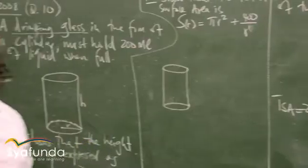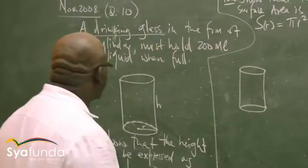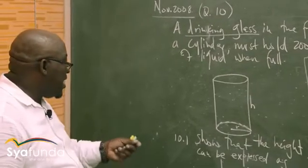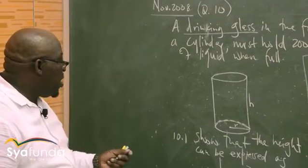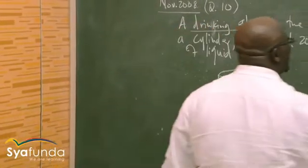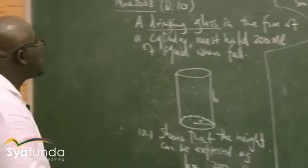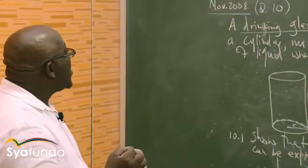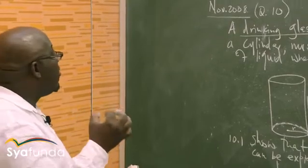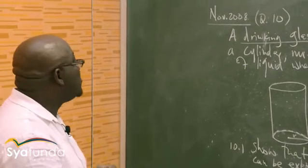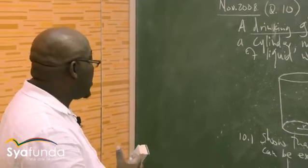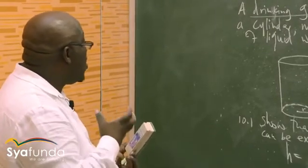Let us come to the question at hand. We're talking about a drinking glass. The first question: show that the height can be expressed as H equals 200 over pi r squared. The drinking glass is in the form of a cylinder that must hold a liquid of 200 mils when full. This cylinder must hold a volume of 200 mils when full.